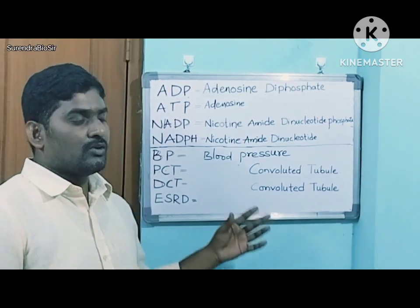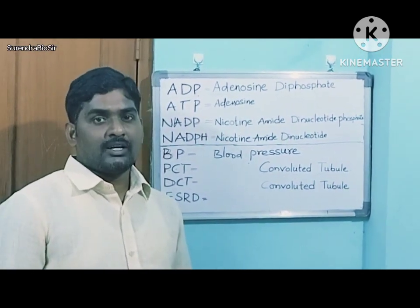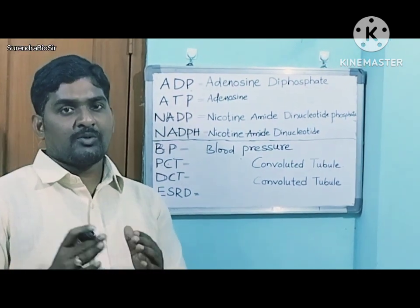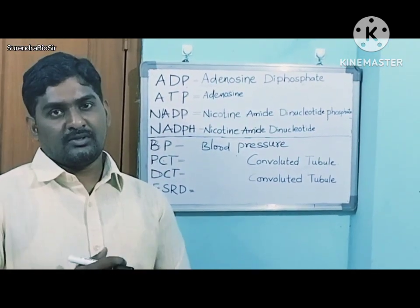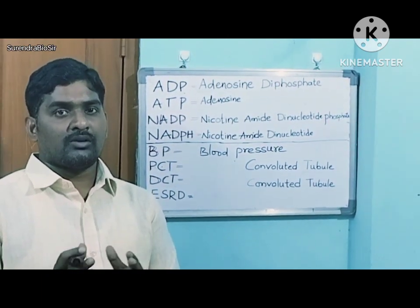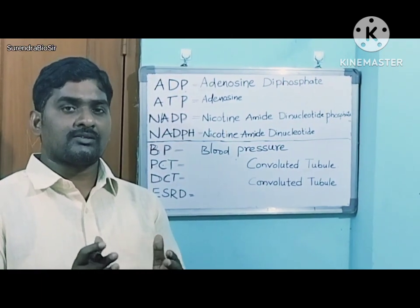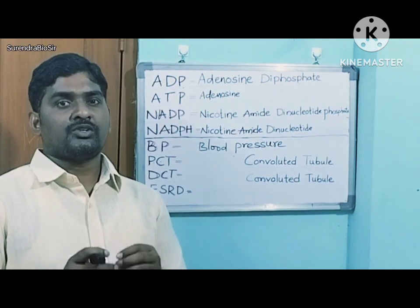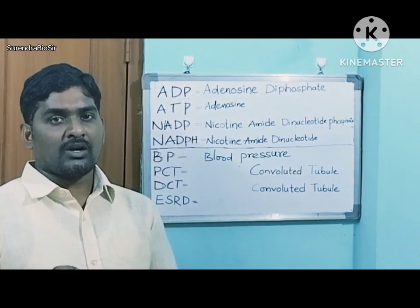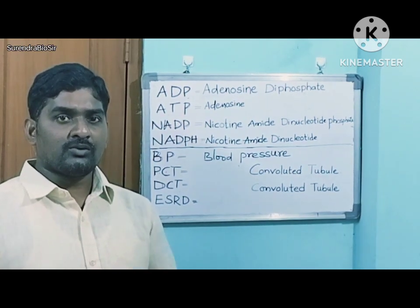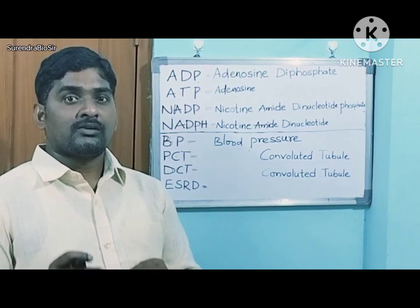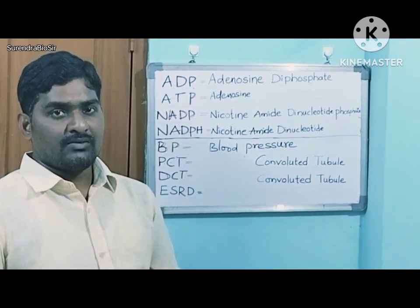Today we are going to discuss about the abbreviations in the 10th class biology textbook. What do you mean by abbreviations? It is nothing but full forms. Some short forms are given in the textbook. Sometimes they may ask in Part B, so we should not leave even one mark. That is why I have started this channel — to give you the knowledge required to get 40 by 40.